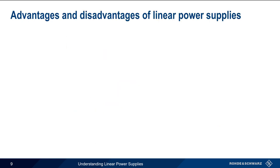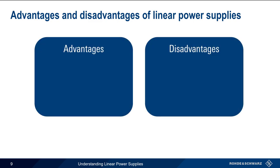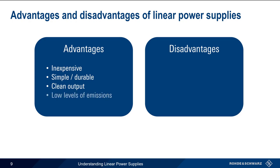Before we end this presentation, let's spend a few moments talking about the advantages and disadvantages of linear power supplies. Linear power supplies are generally inexpensive, simple, and durable. They also produce a relatively clean output — that is, the output DC voltage has low ripple and low noise. From an EMC perspective, linear power supplies also produce low levels of both conducted and radiated emissions.